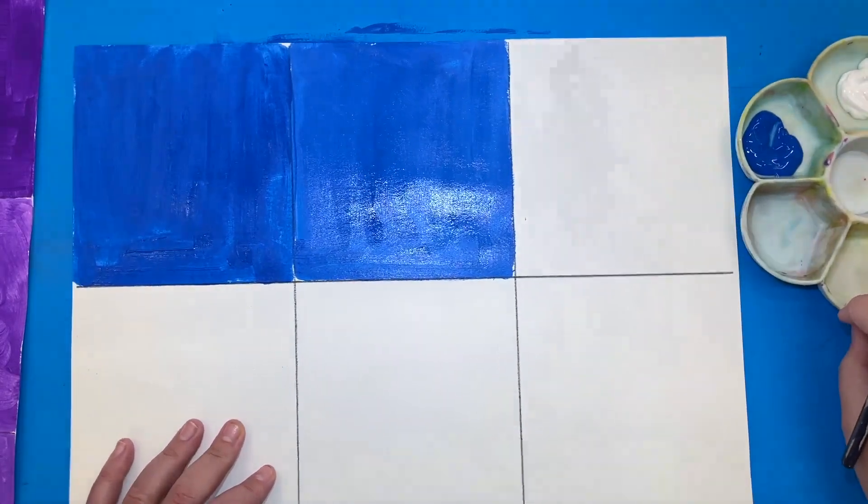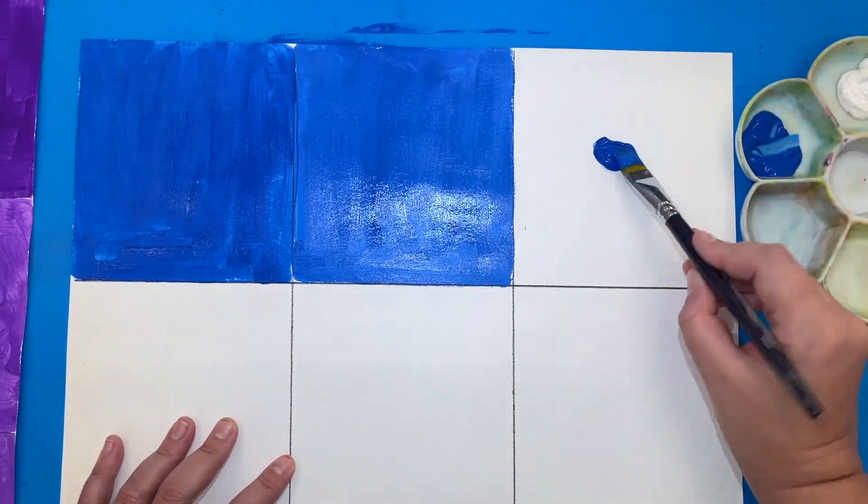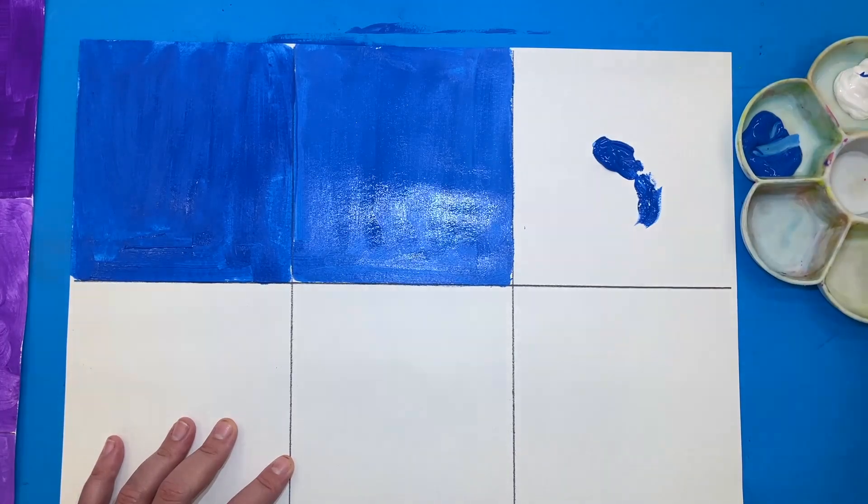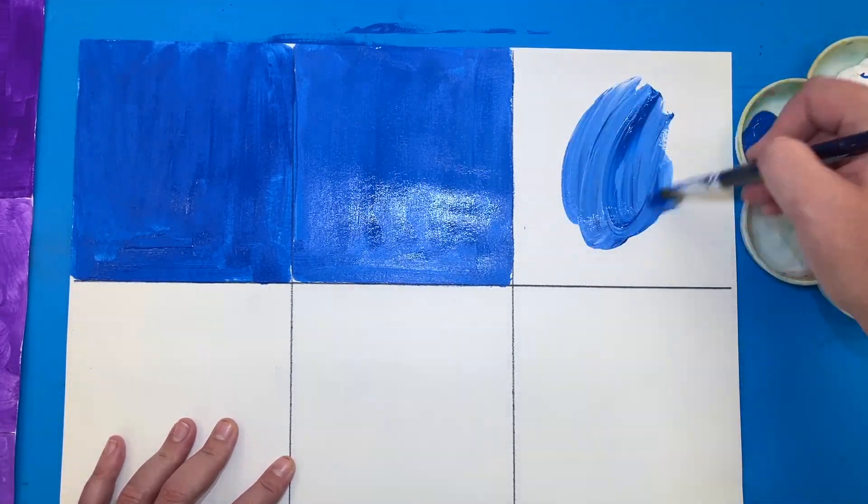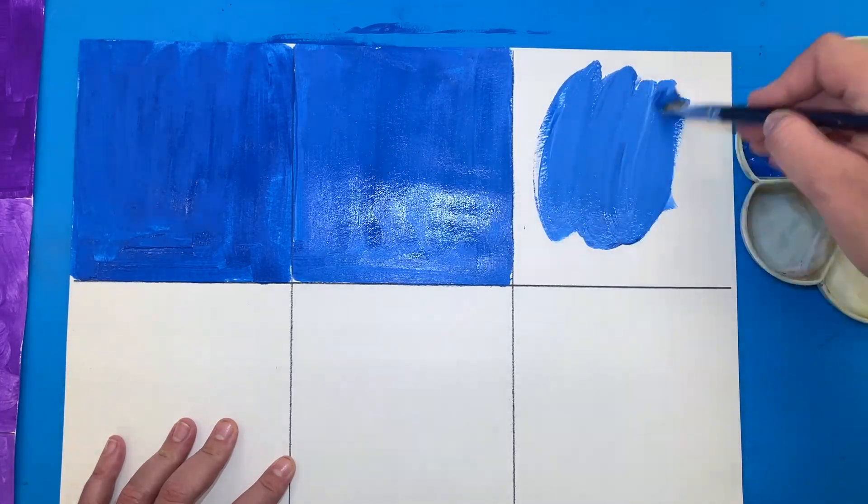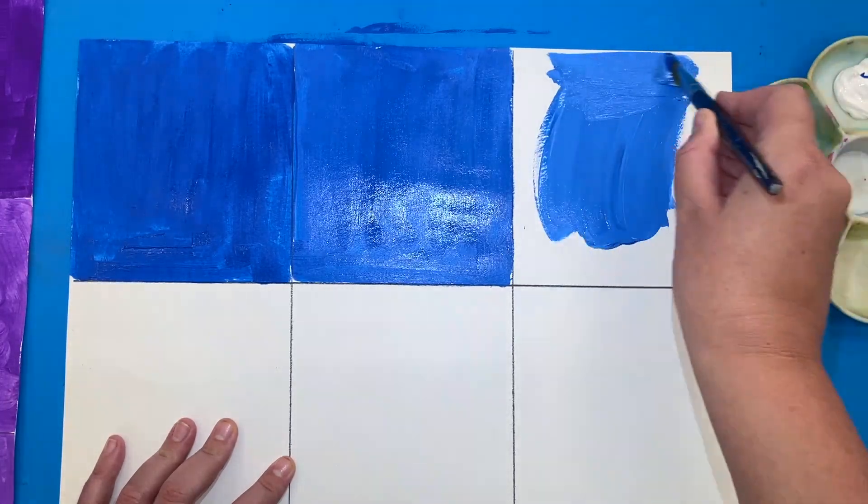With the next square it's the same idea. Take a scoop of your hue and now do a little bit more of a tap of white. You actually don't need as much as you think you do before then mixing it on your paper and spreading it around your square.